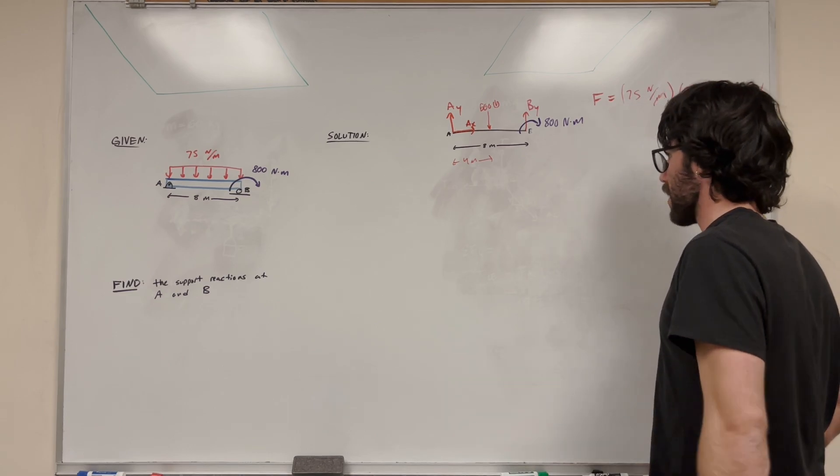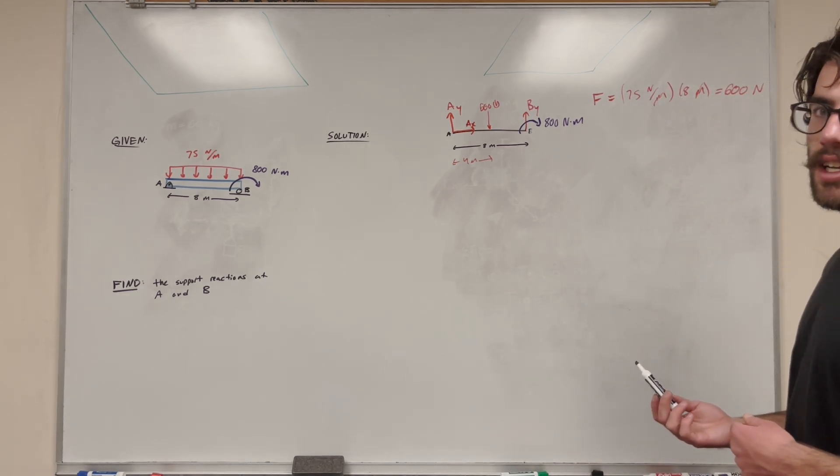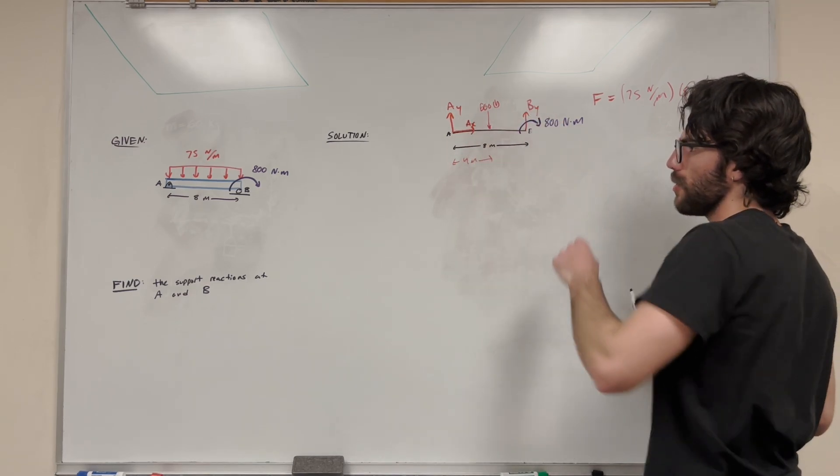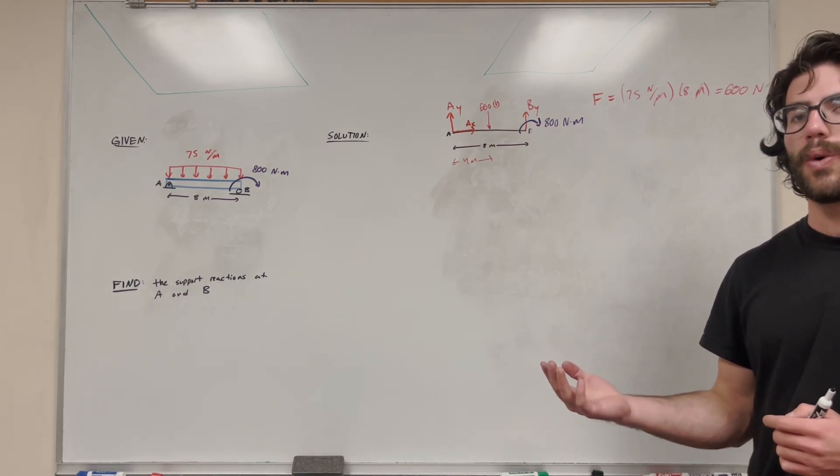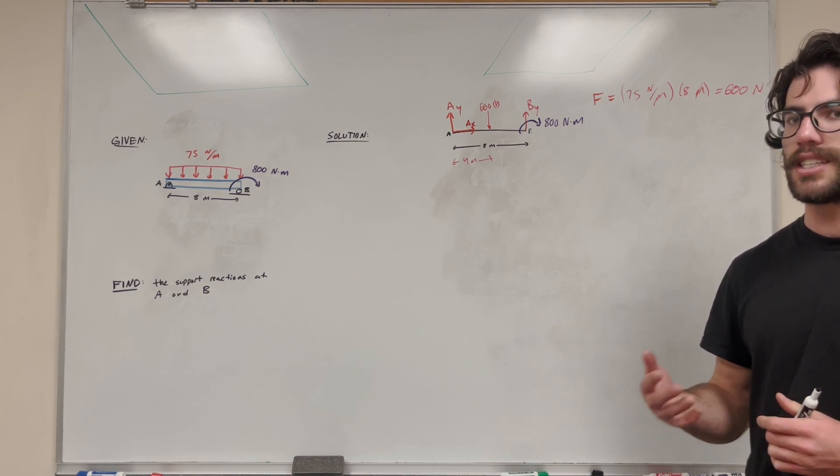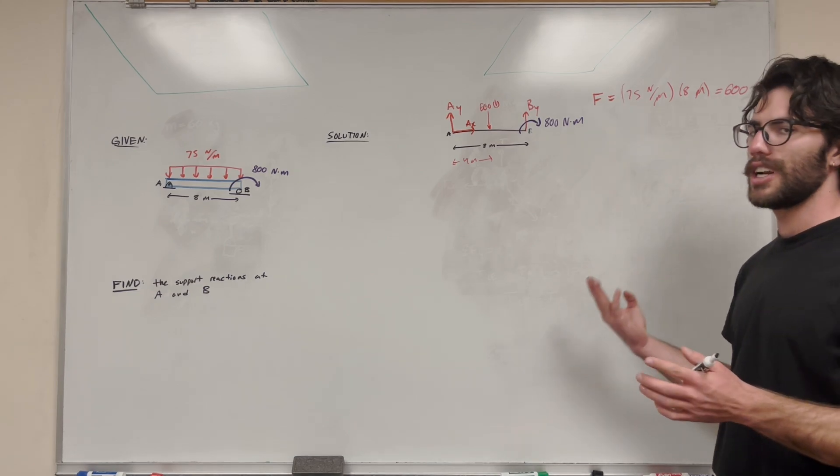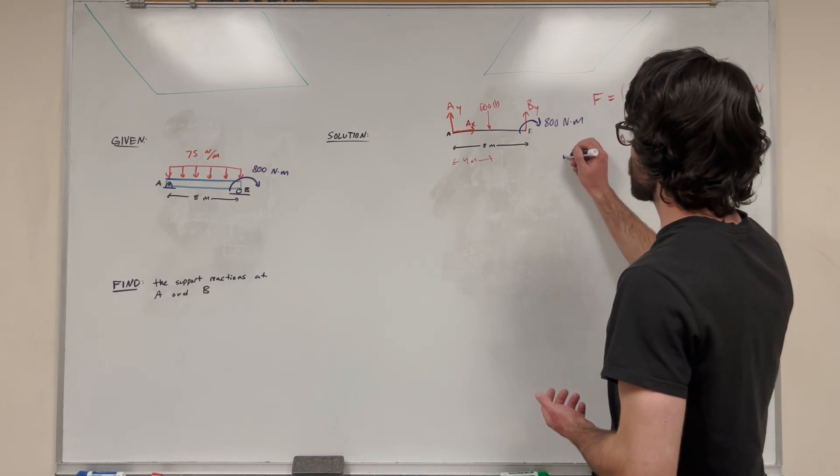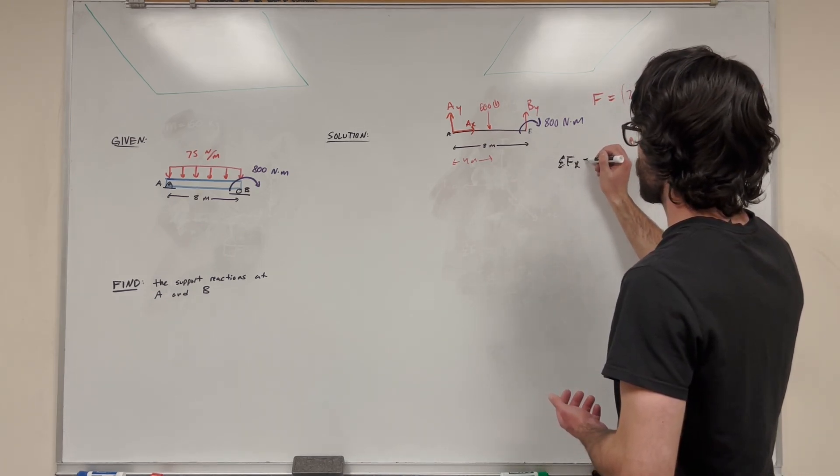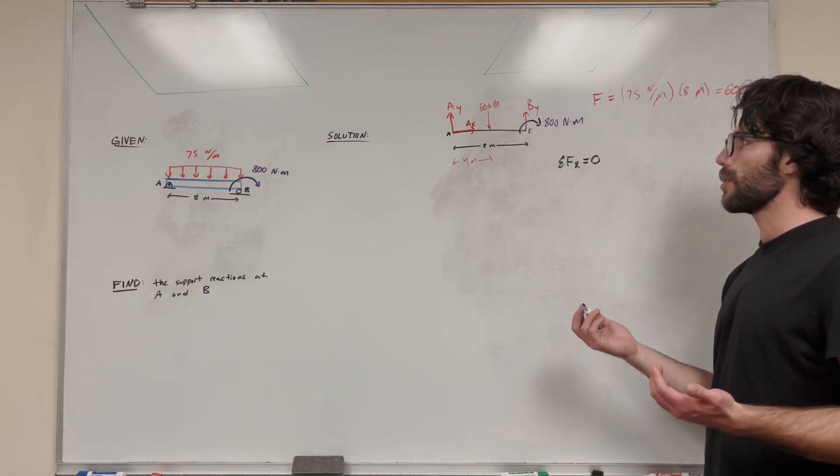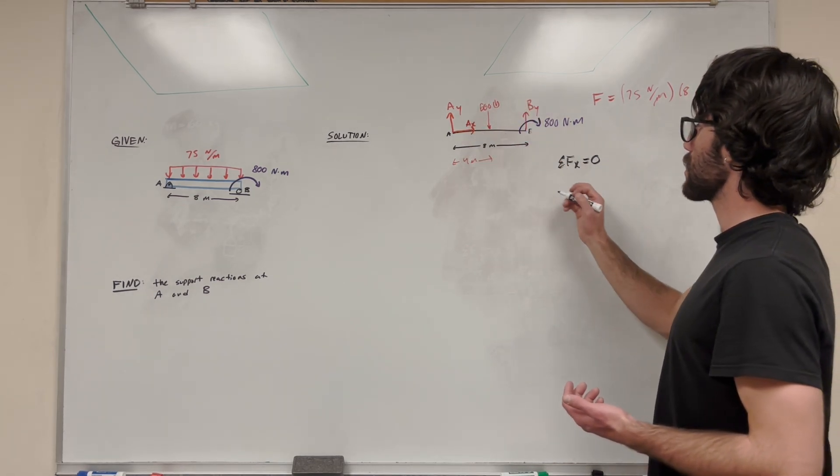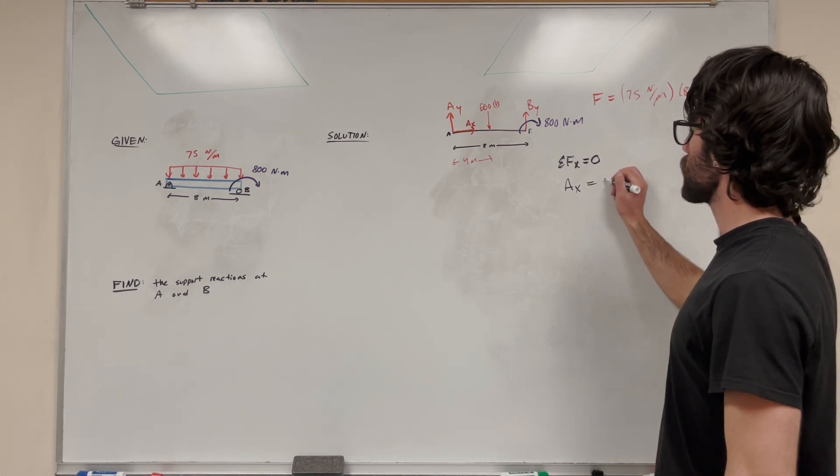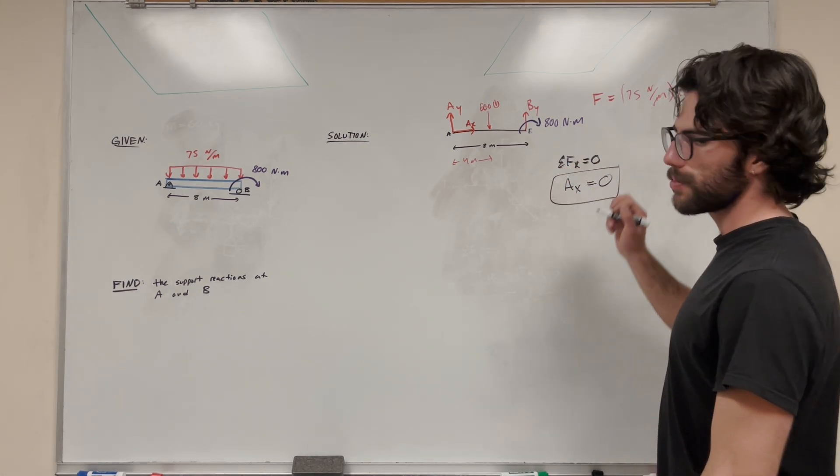So now it's just doing the math. So we've done our free body diagram. We've got all our support reactions. Let's count how many unknowns we have. We have one, two, three unknowns. So we have three equations. Sum of the forces in the Y, sum of the forces in the X, and sum of the moments. So those are three equations, three unknowns. We can solve for this. So let's start with the easiest one usually, sum of the forces in the X. I usually recommend starting with this one. Sum of the forces in the X is equal to zero or at equilibrium. Let's count the forces in the X direction. We have A_x, and that's the only force in the X direction. So I set it equal to zero. And there we go. We found one of our support reactions.